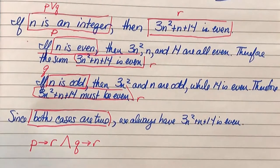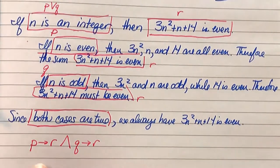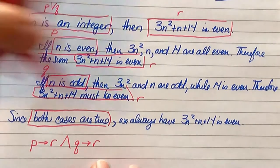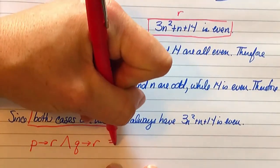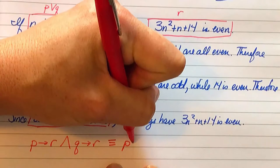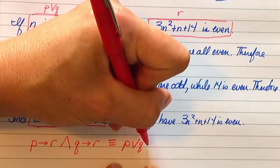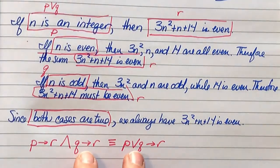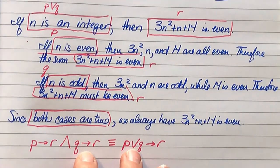So you can see why this statement p implies r and q implies r is equivalent to p or q implies r. The logical equivalence of these two statement forms is really the same as something that we've been doing for a long time, which is breaking down a proof into cases.